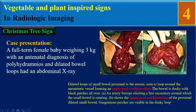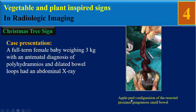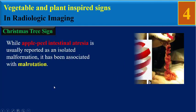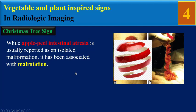This image shows the apple peel configuration of the proximal dilated bowel loop. Gangrenous patches are visible on the dusky loop. In this image, we can see the apple peel configuration of the resected proximal gangrenous small bowel.